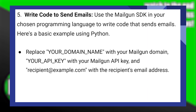Use the Mailgun SDK in your chosen programming language to write code that sends emails. Here's a basic example using Python. Replace your domain name with your Mailgun domain, your API key with your Mailgun API key, and recipient at example.com with the recipient's email address.